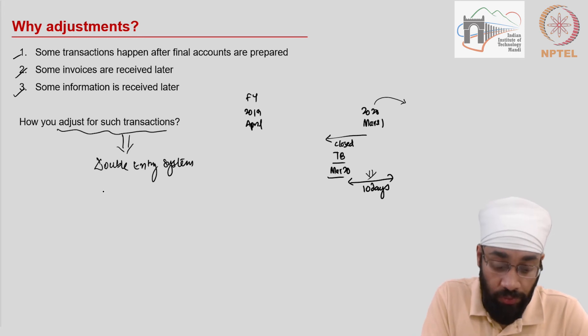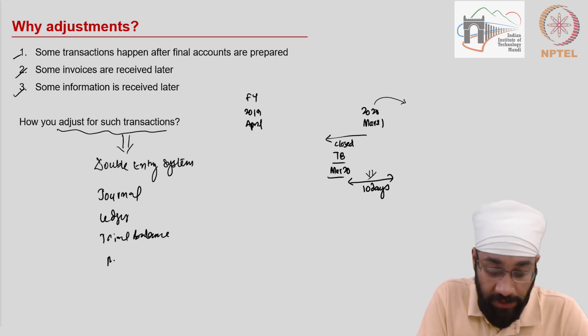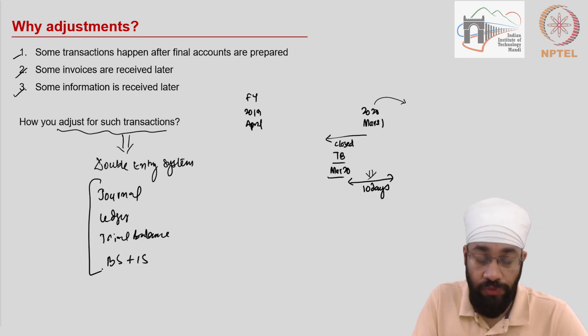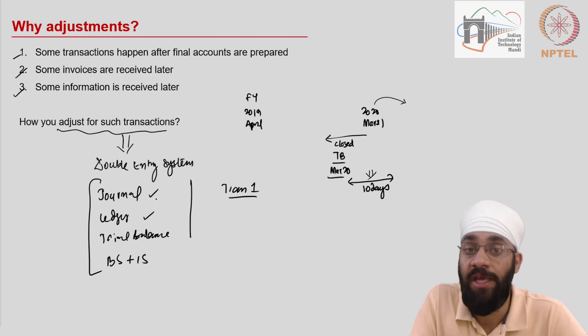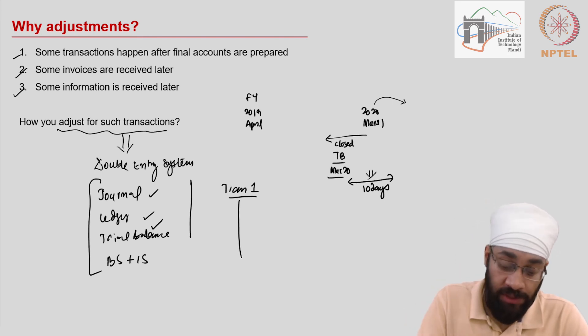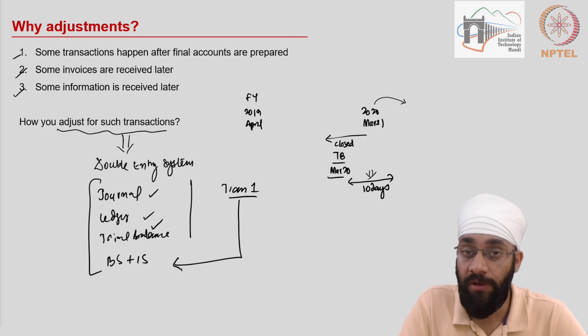Instead of going through the accounting cycle which involves journal, ledger, trial balance, and then preparing balance sheet and income statement, we are going to skip this process because this has been done already. We will say, okay, for transaction one, what would have been its impact if the journal entry was written and posted in the ledger? How would this have affected the account balance shown in the trial balance? Accordingly, we make direct adjustments into the income statement and balance sheet rather than writing the journal entry and doing the ledger posting.